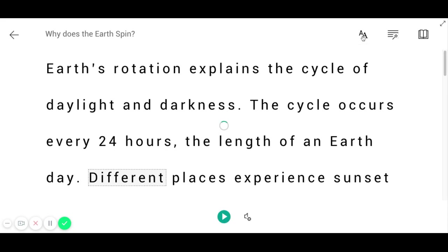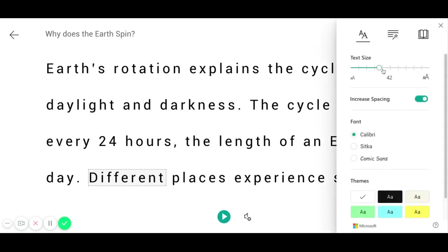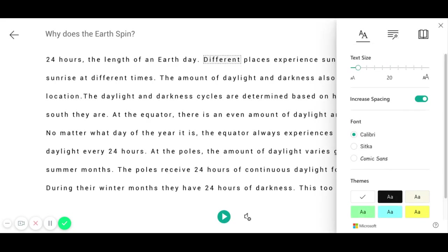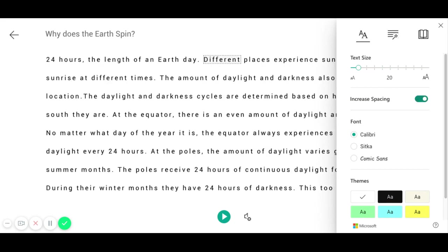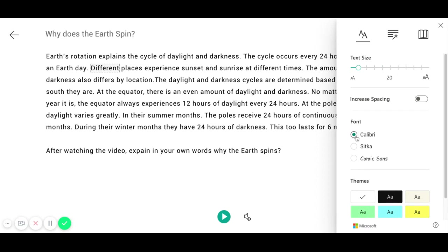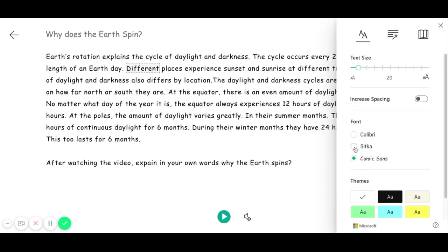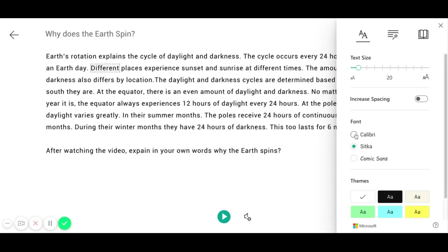Up here, I can change text preferences. I can change the text size and increase spacing if that helps me read. I can change the font from sans serif to serif or Comic Sans. You have some different font options.